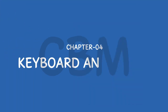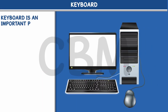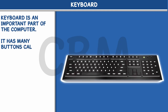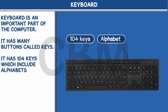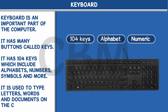Chapter 4: Keyboard and Mouse. Keyboard is an important part of the computer. It has many buttons called keys. It has 104 keys which include alphabets, numbers, symbols and more. It is used to type letters, words and documents on the computer.